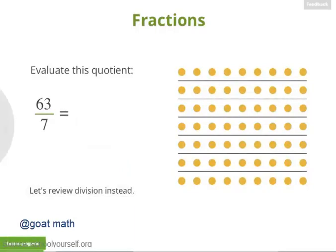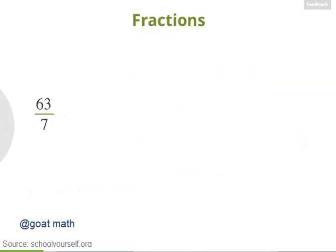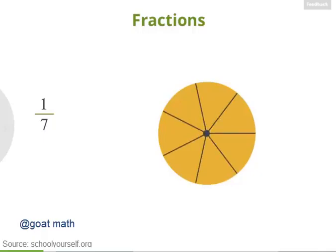Now instead of dividing 63 by 7, what if we try dividing 1 by 7? That might seem a little strange, but let's give it a shot. So we have 1 dot and we're dividing it into 7 equal groups. In the case of 1 dot, we're actually dividing it up into 7 equal pieces. This slice represents 1 divided by 7 dots. So 1 divided by 7 is not a whole number — it's just a piece, or a fraction.